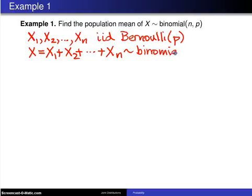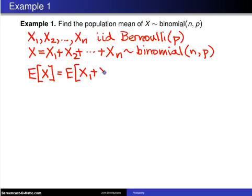That binomial random variable will have parameters N and P. At this point, we can find the expected value of X as the expected value of X1 plus X2 plus Xn.